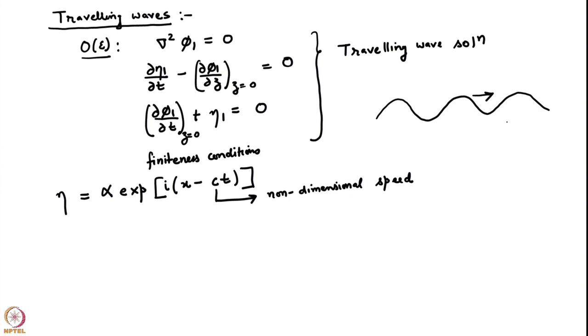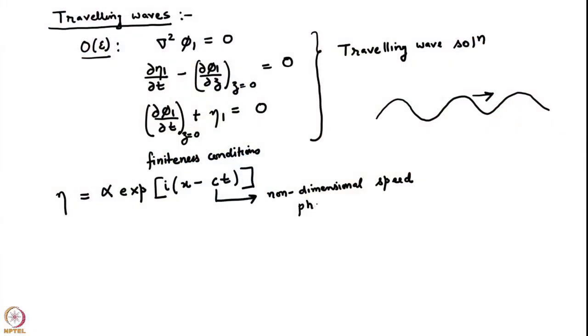This is a non-dimensional speed. Notice that no frequency appears in the expression. When we look for standing wave solutions using the method of normal modes, we look for solutions proportional to e^(iωt), where ω was a non-dimensional frequency that dimensionalizes to √(gk). Here we are looking for a non-dimensional speed, which will turn out to be the phase speed or phase velocity of the system. It is the speed with which this profile travels from left to right without any change of shape. Let us now find traveling wave solutions and the equivalent of the dispersion relation.